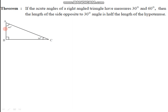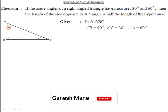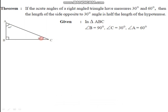To prove this, we need a diagram. Let us have a triangle ABC, which is a right-angled triangle where angle B is equal to 90 degrees. It is given that the measure of angle C is 30 degrees and the measure of angle A is 60 degrees. So for triangle ABC, the measures of the angles are 30 degrees, 60 degrees, and 90 degrees.